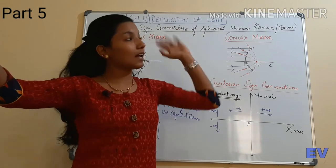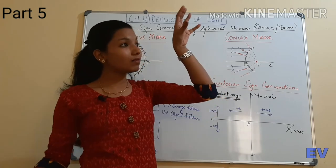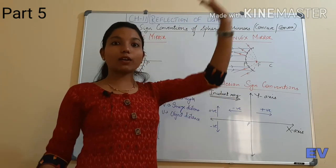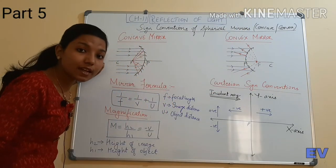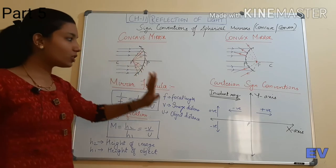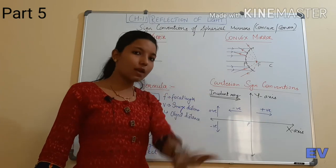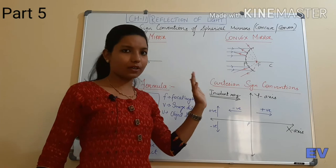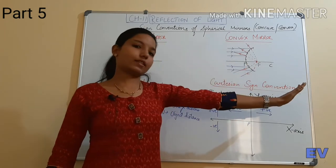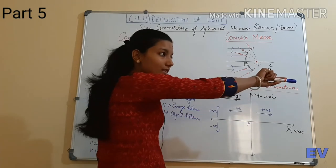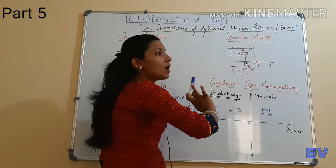The incident ray comes from where the object is — just like sunlight comes from the direction of the sun, or a room light comes from where the bulb is. So if the object is on one side, the incident ray comes from that side. Always remember: the side where the incident ray is — that side is positive. For both concave and convex mirrors, the object is on the same side, so the incident ray comes from the same side.